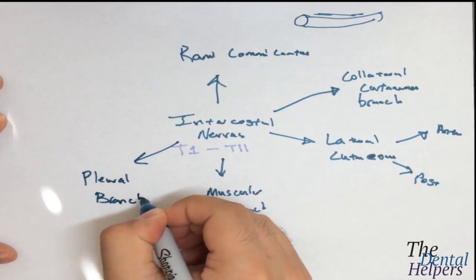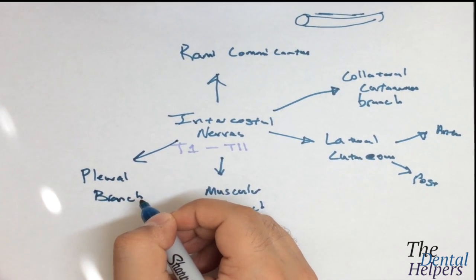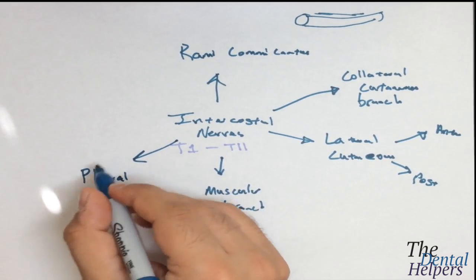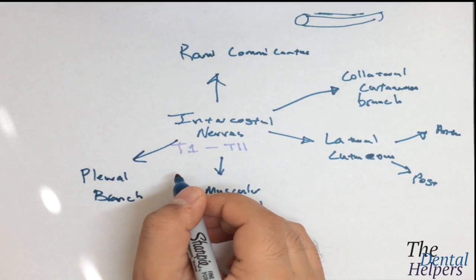This is the sensory branch that goes to the parietal pleura.